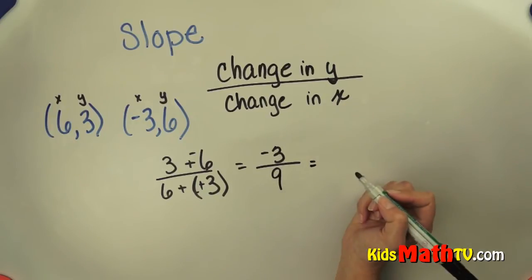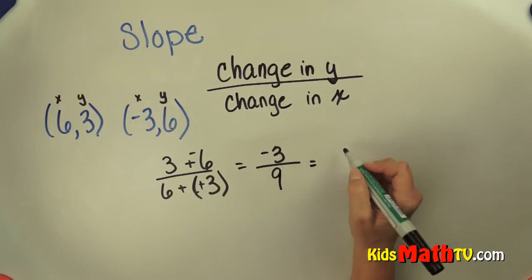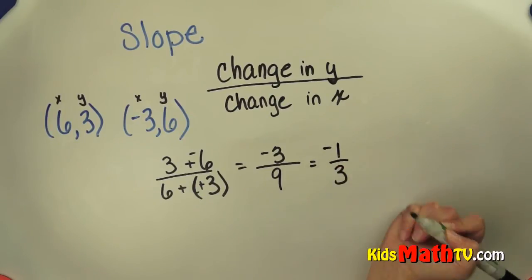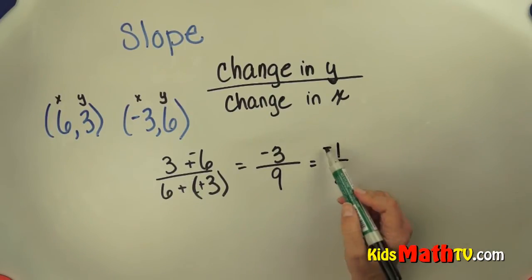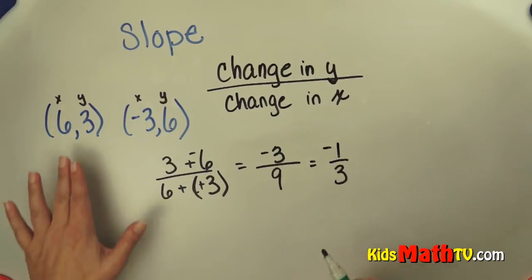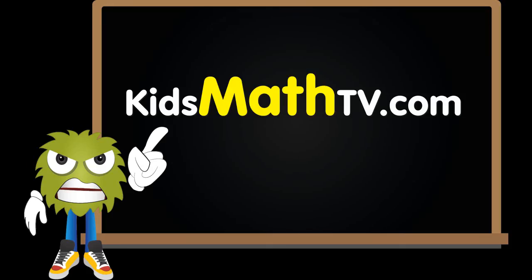Then I can reduce this: if I divide by 3 over 3, I get 1 over 3, and it is negative. So the slope is negative 1 over 3 for these two coordinate pairs. And that's the end of our lesson on slope.